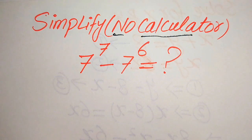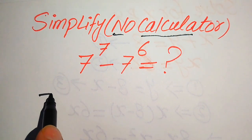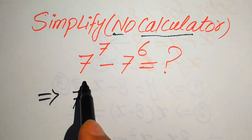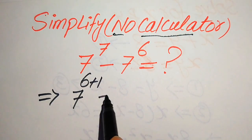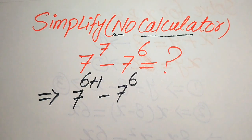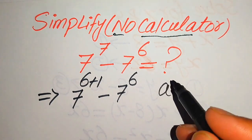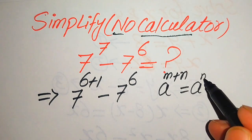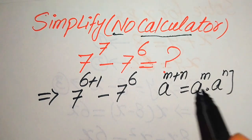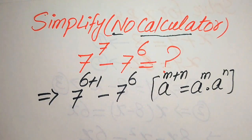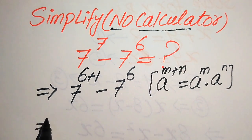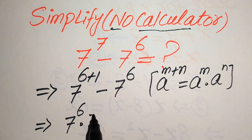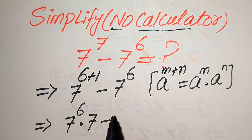The first thing we're going to do is focus on the exponent of the first term. The exponent is 7, so we break this 7 as 6 plus 1, giving us 7 to the power of 6 plus 1 minus 7 to the power of 6. We use the exponent law: a to the power of m plus n equals a to the power of m multiplied by a to the power of n. So we break the exponent and write it as 7 to the power of 6 multiplied by 7 to the power of 1.